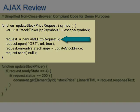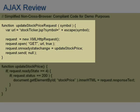Once I have the request object, there are three things I'm going to do. First, I'm going to open it, which is more or less initializing it. The first parameter is going to be my HTTP method. The two most common methods are GET and POST. In this case, I'm going to do a GET so that I retrieve a particular resource. I pass it as a second parameter the URL for the resource I want to receive.